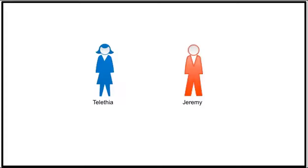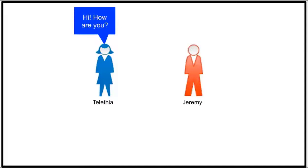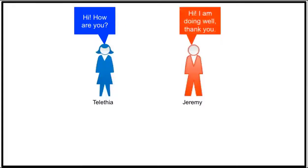Talithia and Jeremy are the only two people in the room and within hearing distance of each other. So without having to mention Jeremy by name, Talithia just asks, 'Hi, how are you?' Jeremy knows Talithia is talking to him and replies also without mentioning Talithia by name.